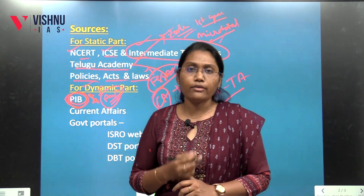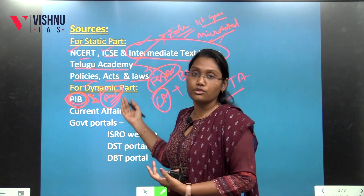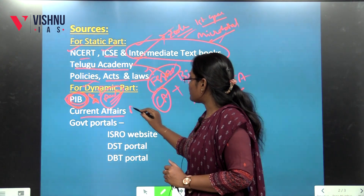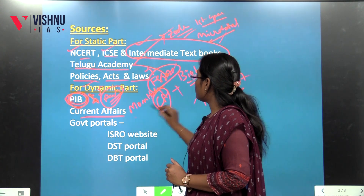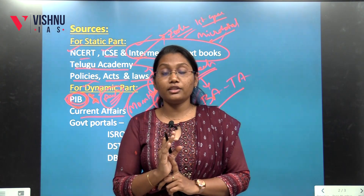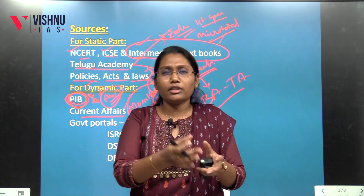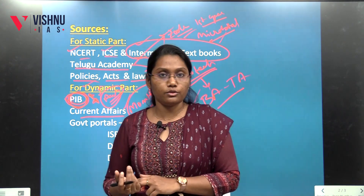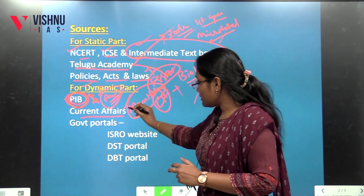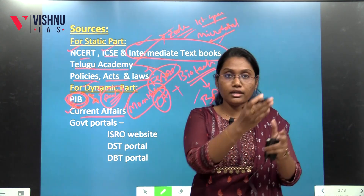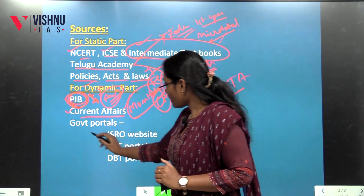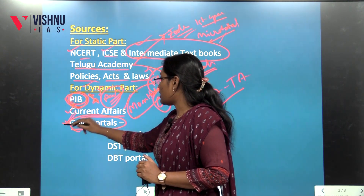There are plenty of institutes. You can use a good amount of information. Coming to the current affairs, you can cover a monthly magazine — it is very important. You can use any institution, but follow the monthly magazine of one institute only. Because you can cover the article in the next month. There are also year-wise compilations — that means, what are the science and technology related parts? You can segregate these articles. And coming to government portals — this is very important.